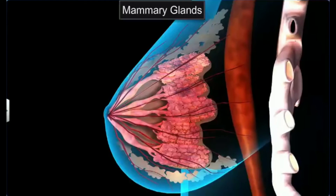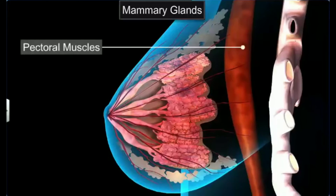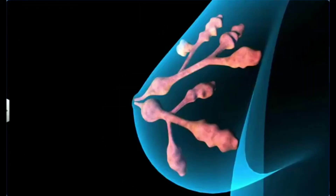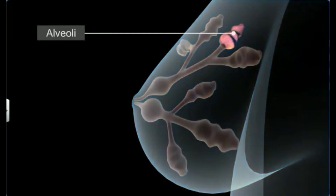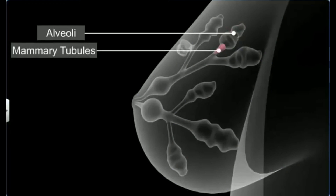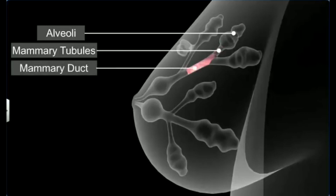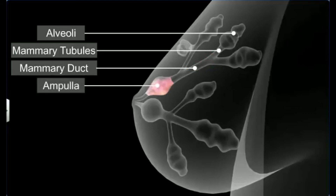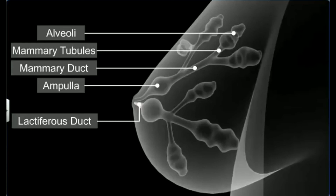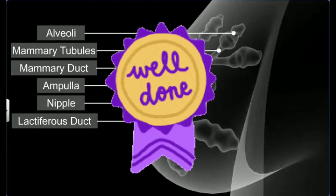The female reproductive structure is supported by the mammary glands. The mammary glands, or breasts, are modified sweat glands that lie over the pectoral muscles; they contain glandular tissue and a variable amount of fat. Internally, each breast is divided into 15 to 20 mammary lobes containing clusters of cells called the alveoli. The alveoli open into the mammary tubules, and the tubules of each lobe join to form the mammary duct. Several ducts join to form a wider ampulla, which is connected to the lactiferous duct. The lactiferous duct opens out at the nipple, from which milk is sucked out.